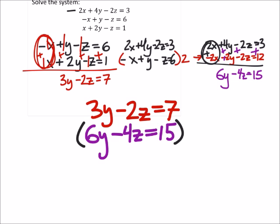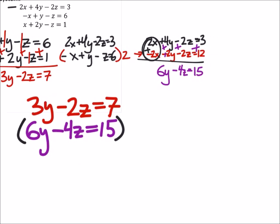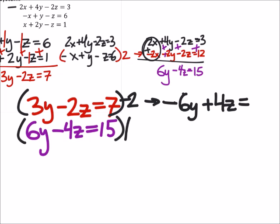I'm going to multiply the top one by negative 2. So I got a negative 6y plus 4z equals negative 14. And then if I multiply this second one by 1, that didn't change anything.